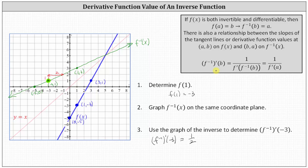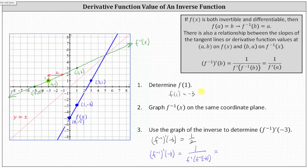So if we apply this definition to number three, we can say that f inverse prime of negative three is equal to one divided by f prime of f inverse of negative three. Now, f inverse of negative three equals positive one, and we know this for two reasons. If we take a look at the graph of f inverse, it contains the point negative three comma one, which indicates f inverse of negative three equals positive one. Or, because f of one equals negative three, we know f inverse of negative three equals positive one.